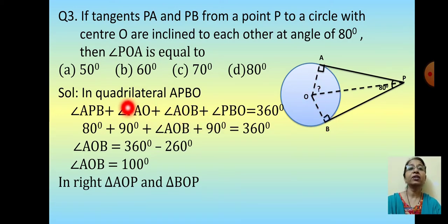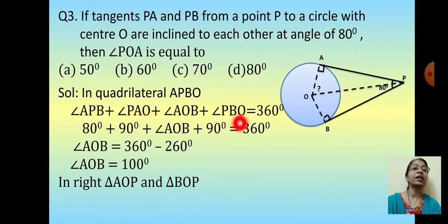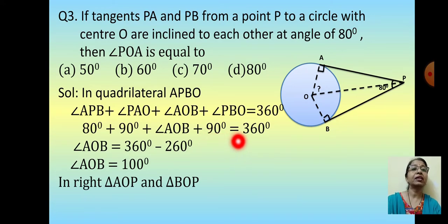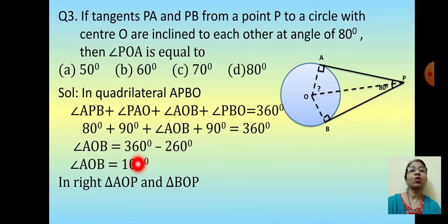Consider quadrilateral APBO. The sum of all angles of a quadrilateral is 360 degrees. PAO is 90 by the radius perpendicular to the tangent property, PBO is 90 by the same property, and APB is 80. Their sum is 260, so the unknown angle AOB is equal to 360 minus 260, which is 100 degrees.